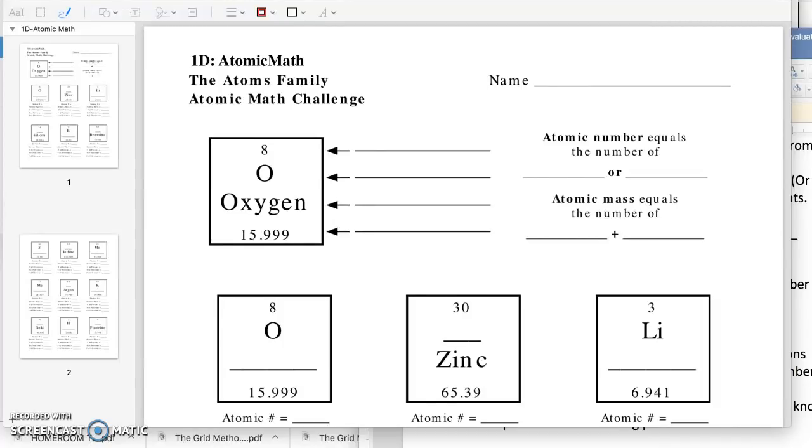Hi 5th graders, now you are on section 1d atomic math. This section requires you to understand some of the things that you learned in the brain pop video. So if that was a little bit unclear, you might need to go back and review that if you start to get a little lost here. One of the beautiful things about this grid method is that you can take the time that you need in order to master this activity.